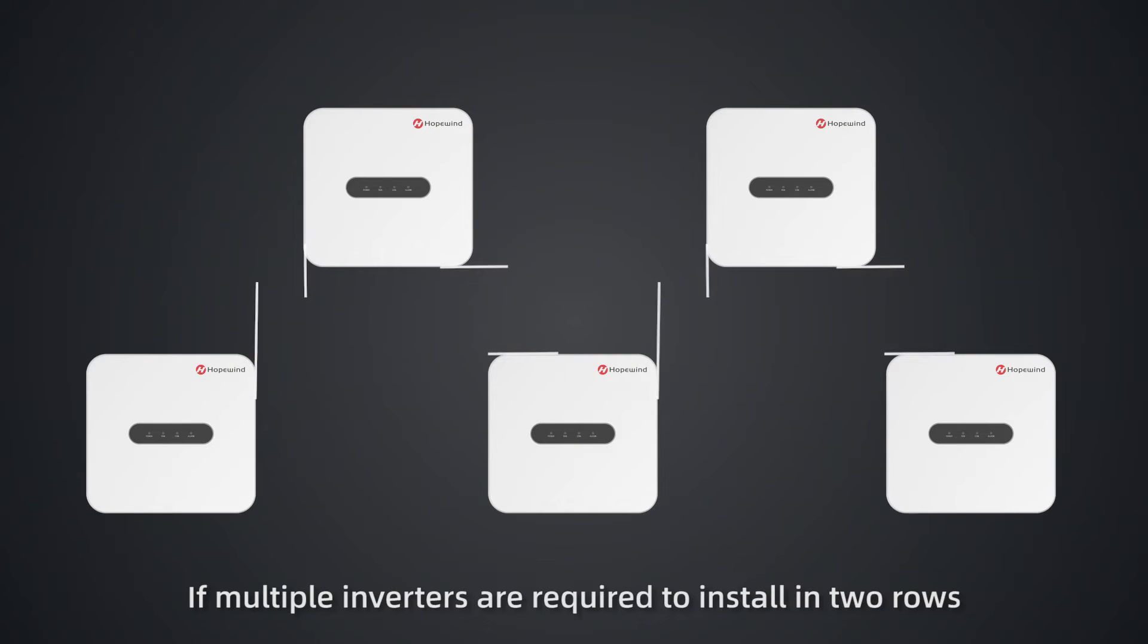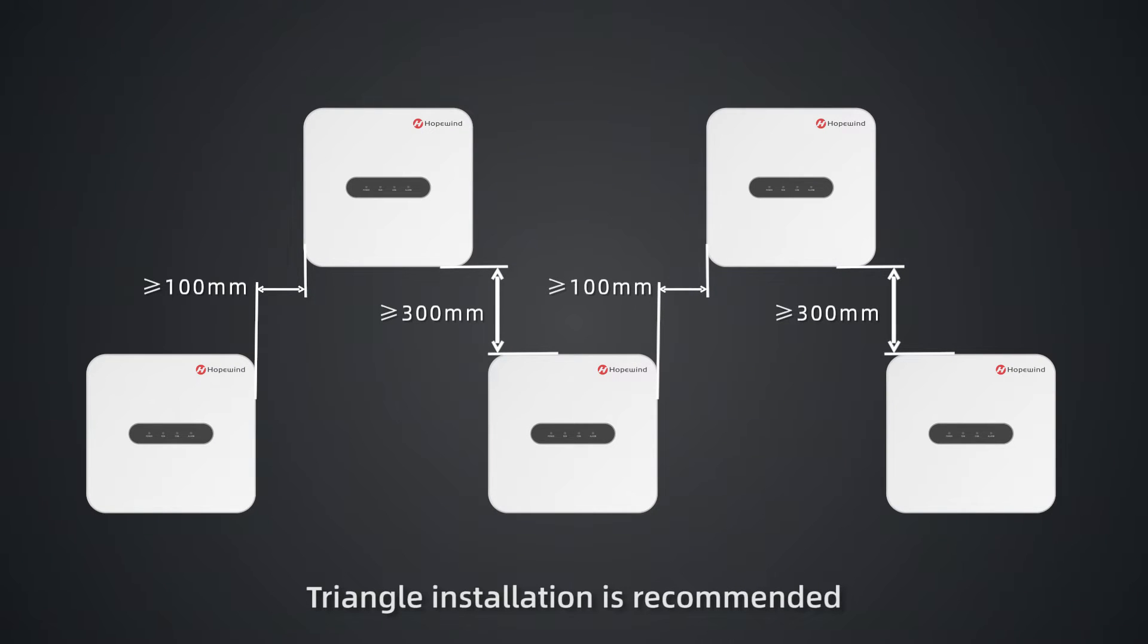If multiple inverters are required to be installed in two rows, triangle installation is recommended. More than 300 mm space should be reserved on the left and right of the inverter.